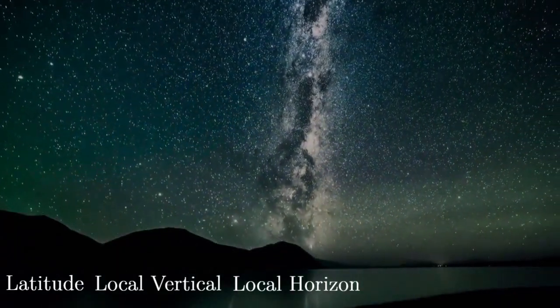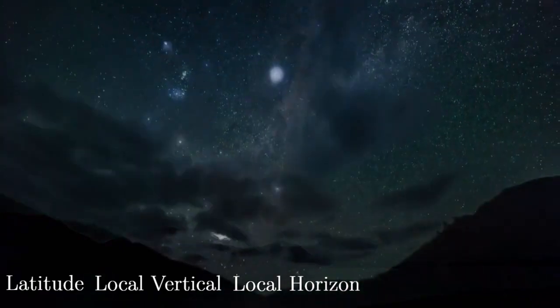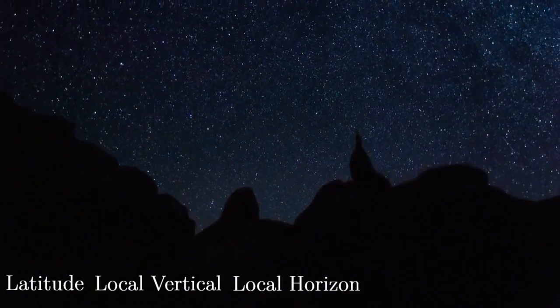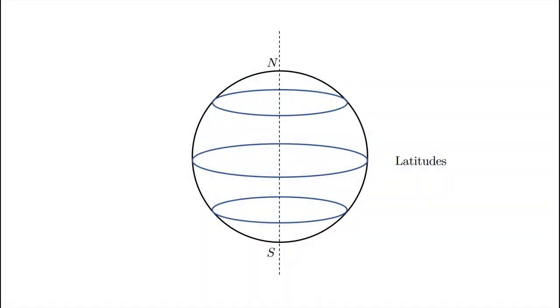I trust that all of you know what a latitude is. However, it never hurts to review a few things. A latitude is a circle drawn on the earth's surface that is perpendicular to the north-south line. As you can see, depending on where we draw the latitude circle, the size of the circle varies. The largest latitude is called the equator. The plane containing the equator is called the equatorial plane.